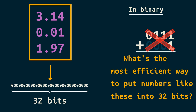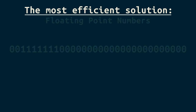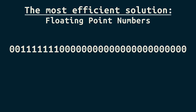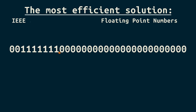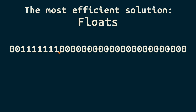The solution is what we call a floating point number. The actual point is here. Formally, these are IEEE 754 32-bit numbers, but you don't need to remember that. We'll call them floats for short.